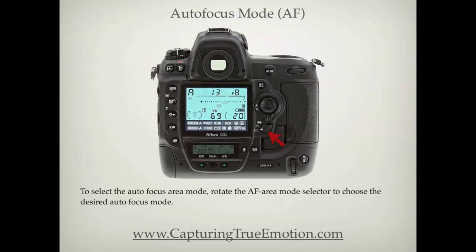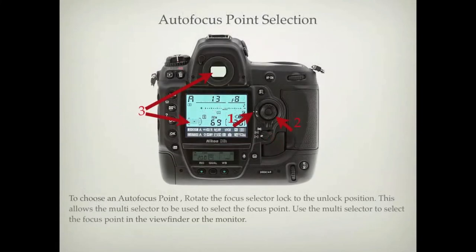To select the autofocus area mode, rotate the AF area mode selector to choose the desired autofocus mode. To choose an autofocus point, rotate the focus selector lock to the unlocked position. This allows the multi-selector to be used to select the focus point in the viewfinder or the monitor.